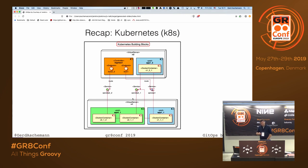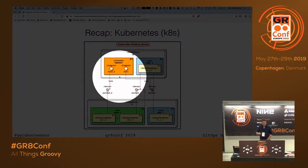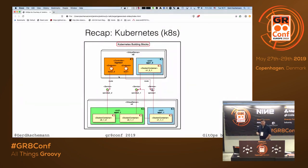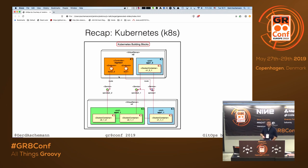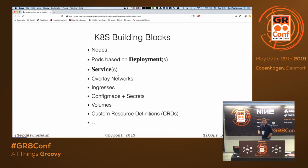If a service wants to call another service it only needs to know the service name, which corresponds to a DNS name. It can easily resolve the internal IP address and port of the green service implementations, and Kubernetes routes the traffic accordingly. Additionally, if you want to access a service from the outside, there is usually a controller plane implemented by a so-called ingress controller, which provides a service endpoint to the outside world.